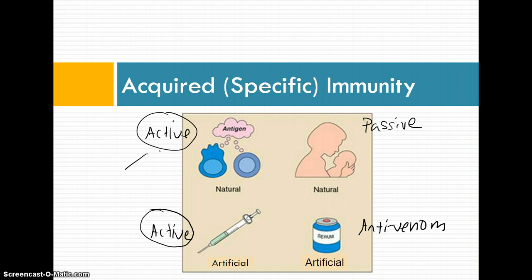If you recall, there are two subtypes to active immunity. There's humoral, which is when the infection is located in your body fluids, as opposed to internally within your cells, which is called cell mediated. We're going to begin today by looking at humoral immunity, then we'll look at cell mediated, and finally wrap up with a look at artificial active immunity known as vaccines.